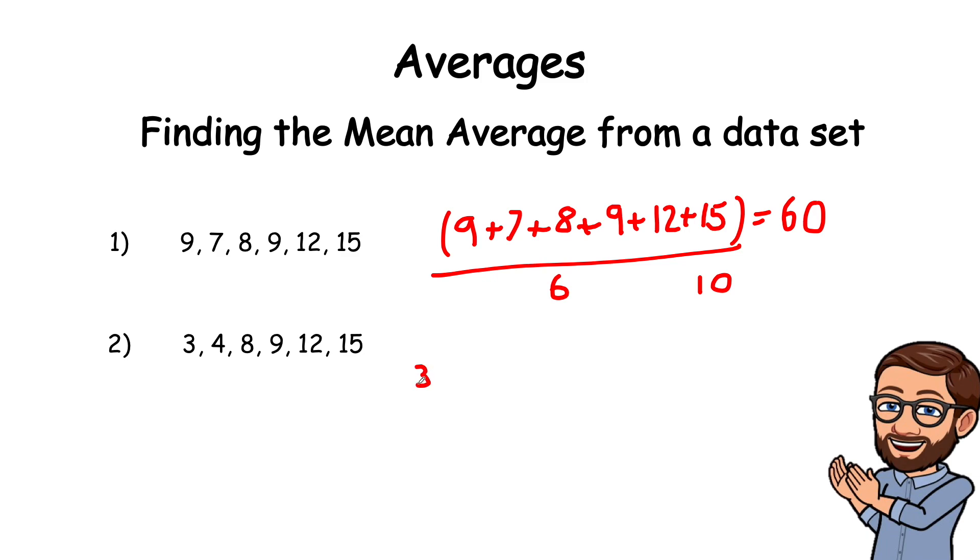So you've got 3 plus 4 plus 8 plus 9 plus 12 plus 15. Okay so when you add all those together you get 51. And again we divide it by the number of numbers in the set which is divided by 6. And our answer will be 8.5.